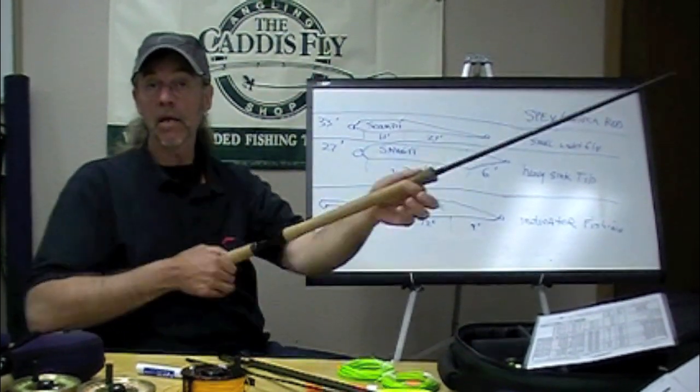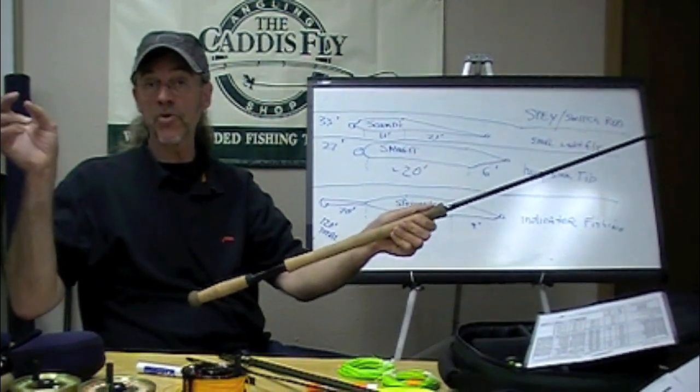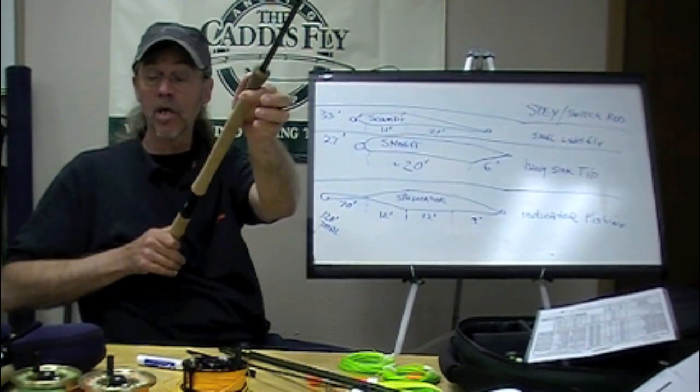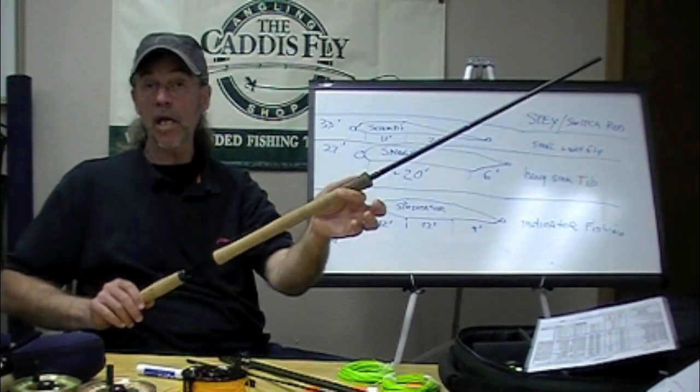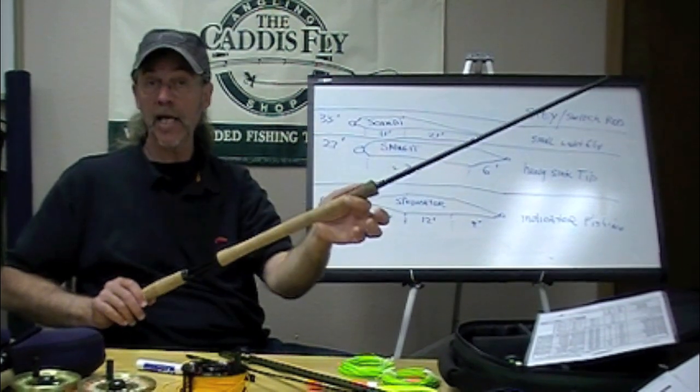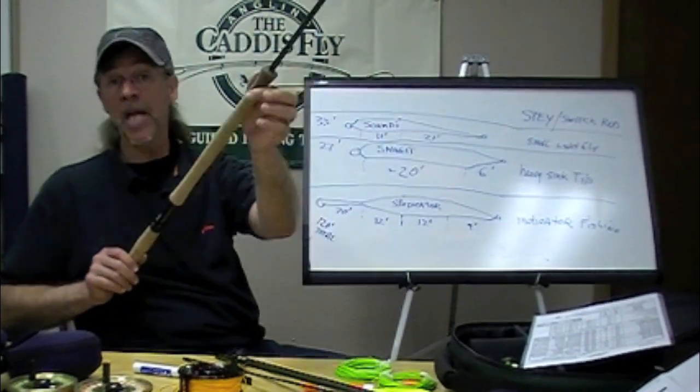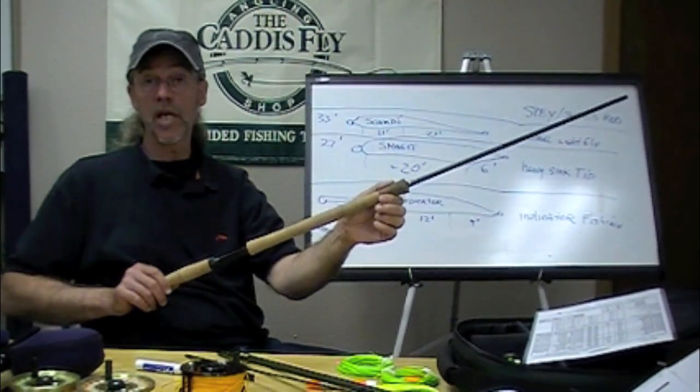Circle spey: throw your anchor upstream, come around and out. You can make really long casts, short casts, shoot line, and then mend to get a really good dead drift.